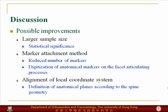However, as this is the initial study, with a larger sample size we could improve statistical significance. We would also like to reduce the number of markers placed on the facet joints, as we believe that might affect the kinematics. In the future, we would like to define the anatomical planes according to the spine geometry.